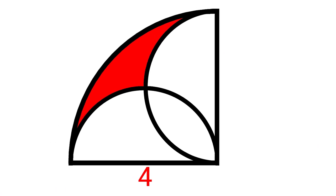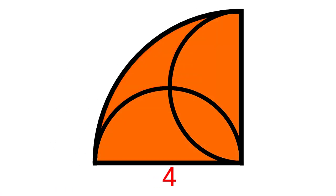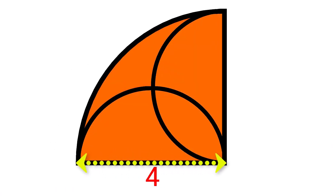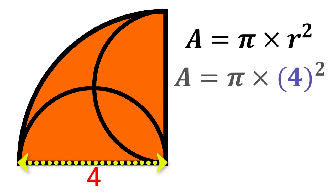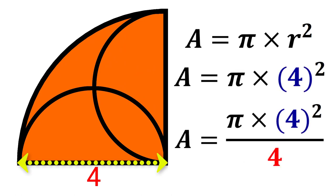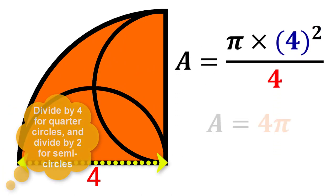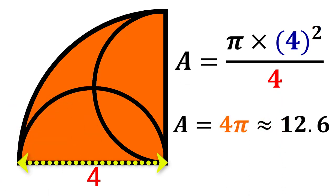I'll start by finding the area of the quarter circle. Notice that the radius is 4 units long. So plugging that into the formula, then dividing by 4, should give us the total area of 4 pi, which is approximately 12.6 square units.